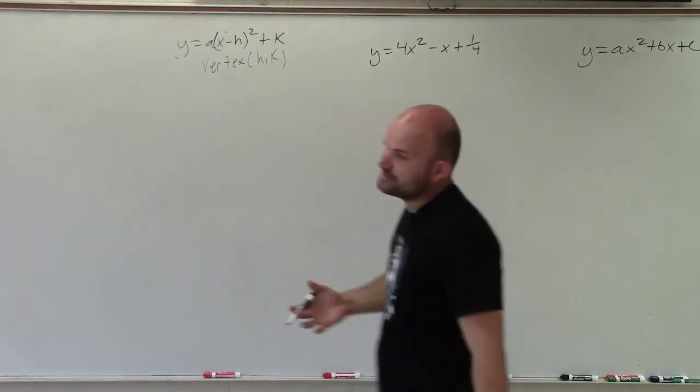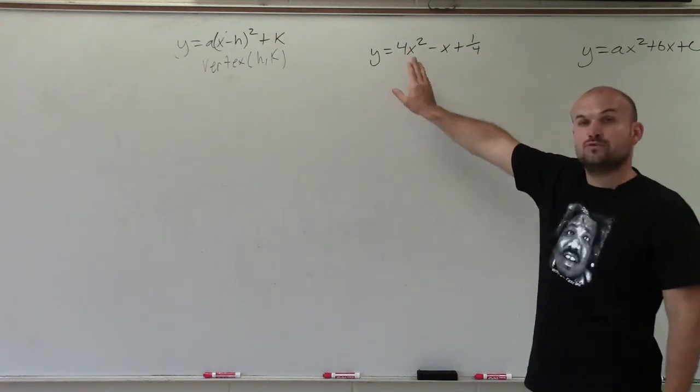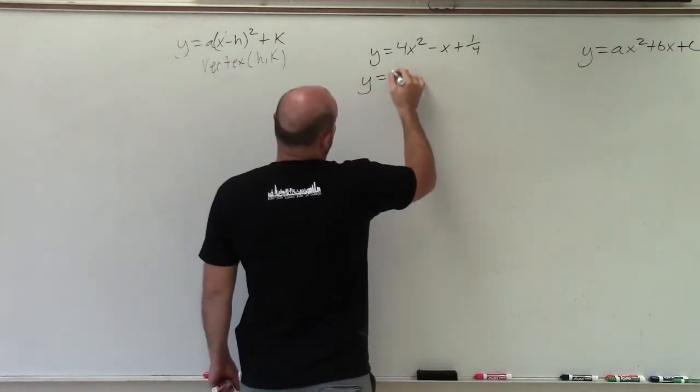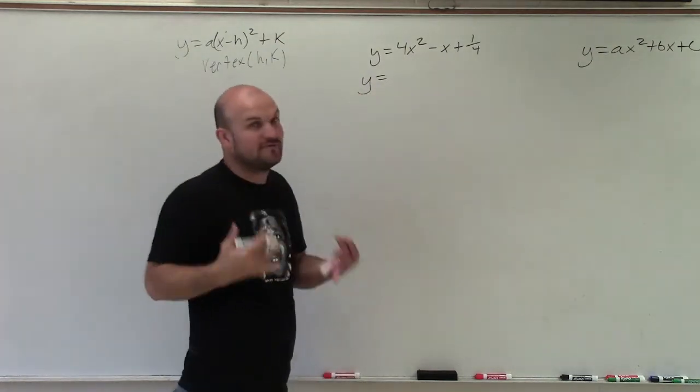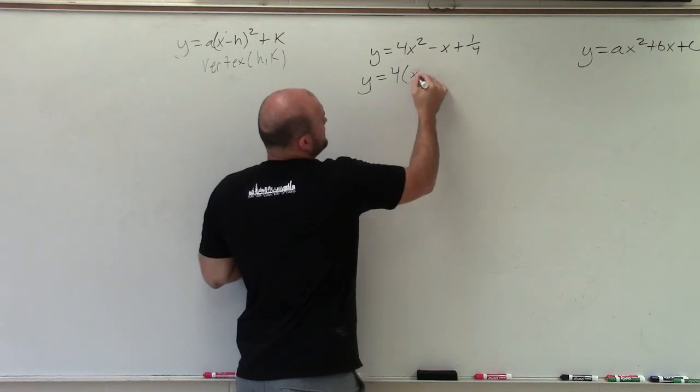To do that we need to complete the square. But before we complete the square we need to make sure that the coefficient of my quadratic term is 1. So I need to factor out that 4, and I'm only going to be factoring out of my first two terms. So I factor out a 4, I'm going to have x squared.